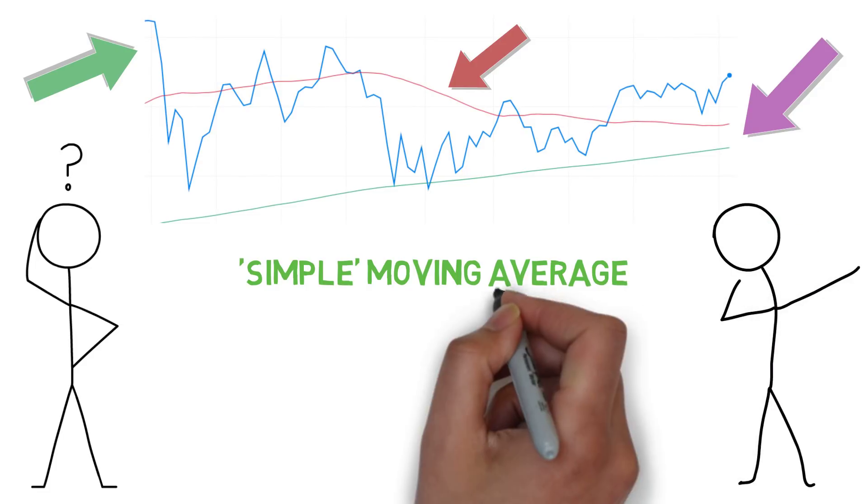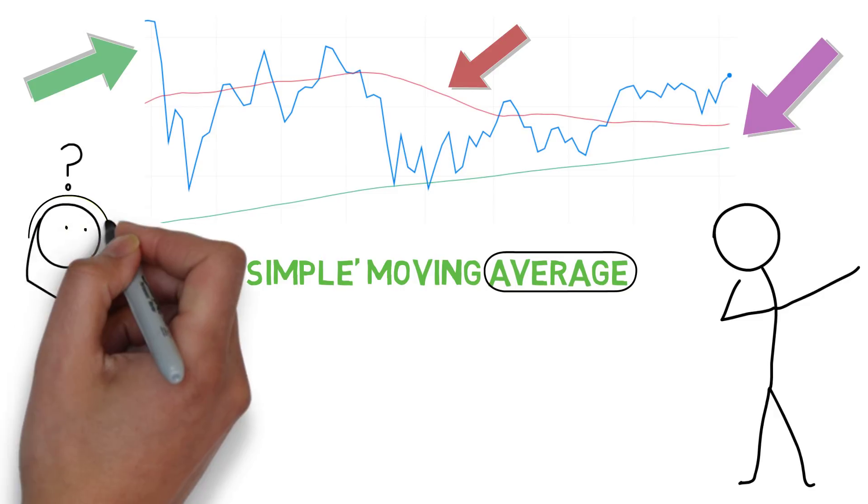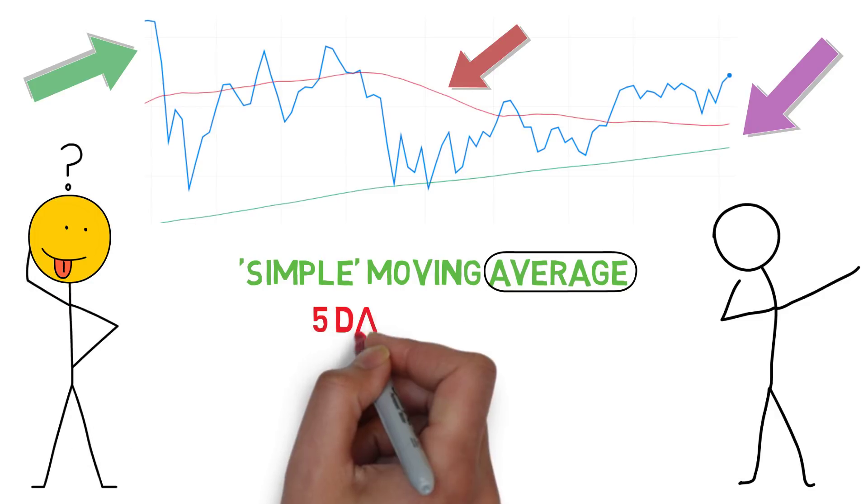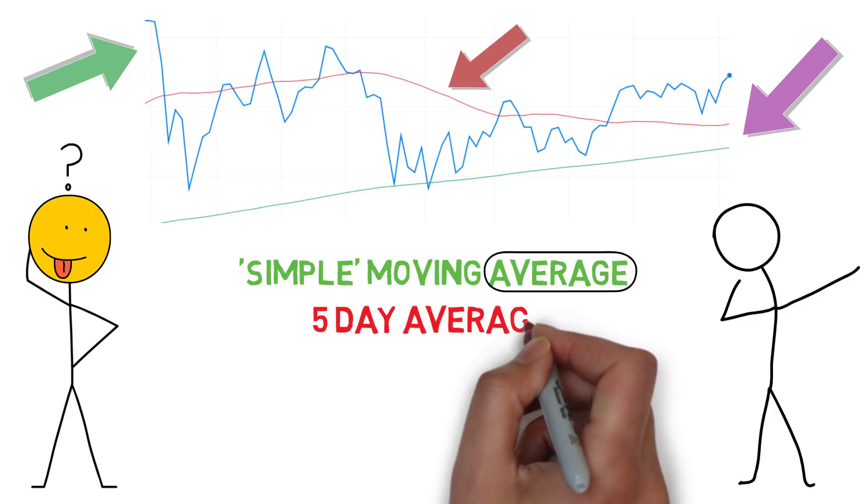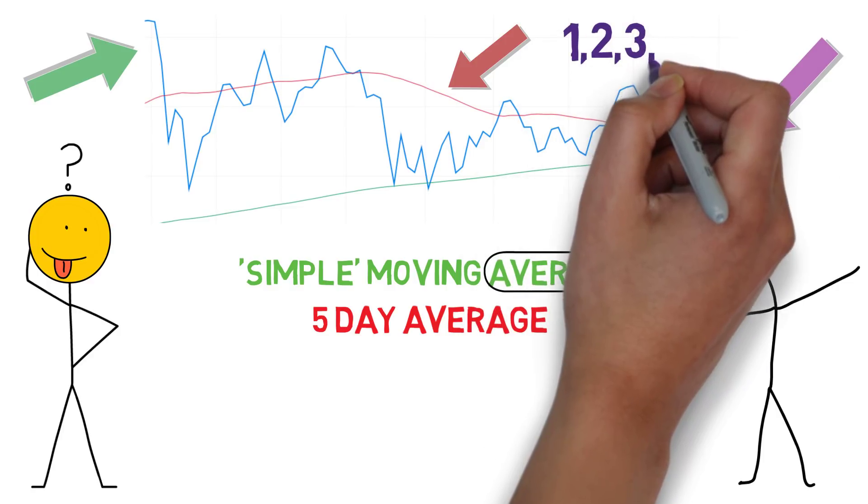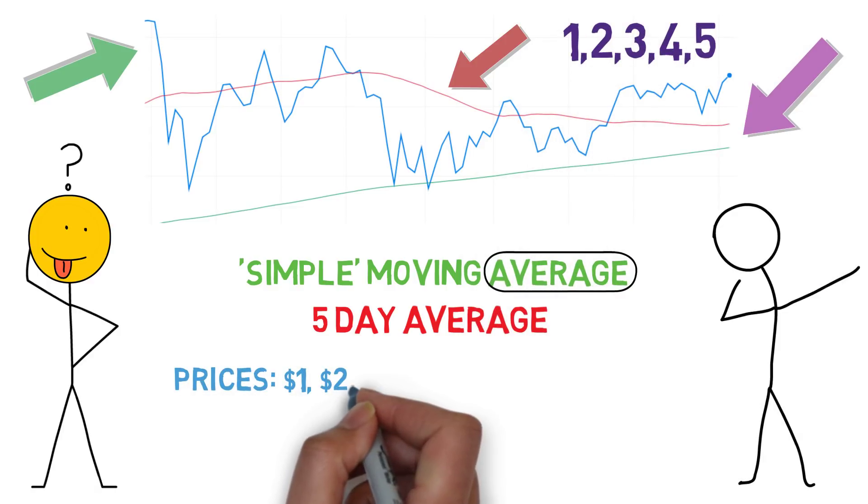A simple moving average is as it sounds: the average movement of a stock price. Let's see how these lines are calculated. You can choose any number for the average. Let's use a 5-day average as our example. We just take the stock price for the past 5 days and divide it by 5.